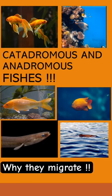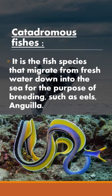Hello everyone. Here we are going to talk about two types of migratory fishes: catadromous and anadromous. Basically, the fishes migrate from one place to another place during the breeding season.